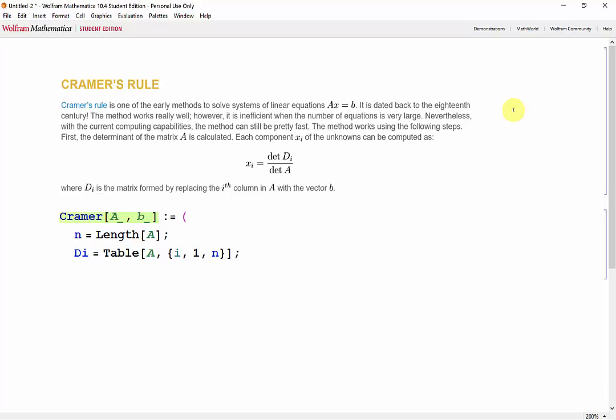Now that we have our table of As, we can go ahead and start switching the columns of the As with our B vector. To do this, we'll use the do loop we learned earlier because we need to repeat the process n times. So now do.